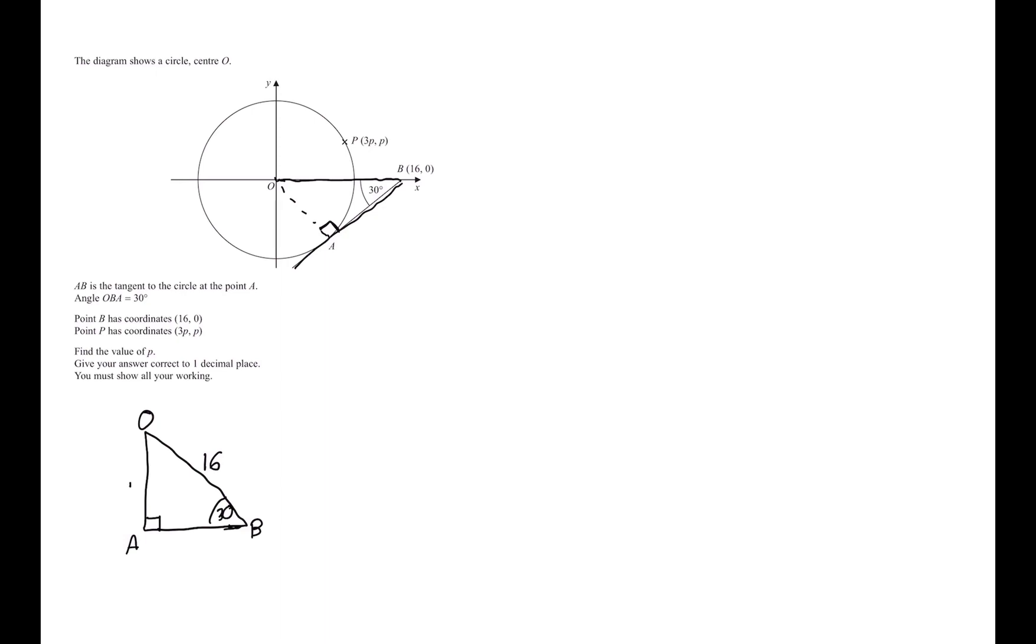Now what we want to find is OA, as OA is also the radius of the circle. We can see that P is also equal to the radius of the circle, as P and A both lie on the circle, which means they are both radius of the circle. So we can use trigonometry to find this length OA.